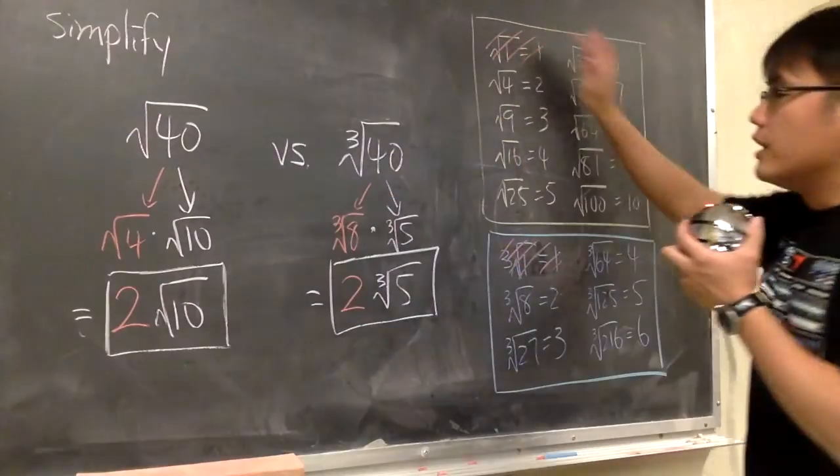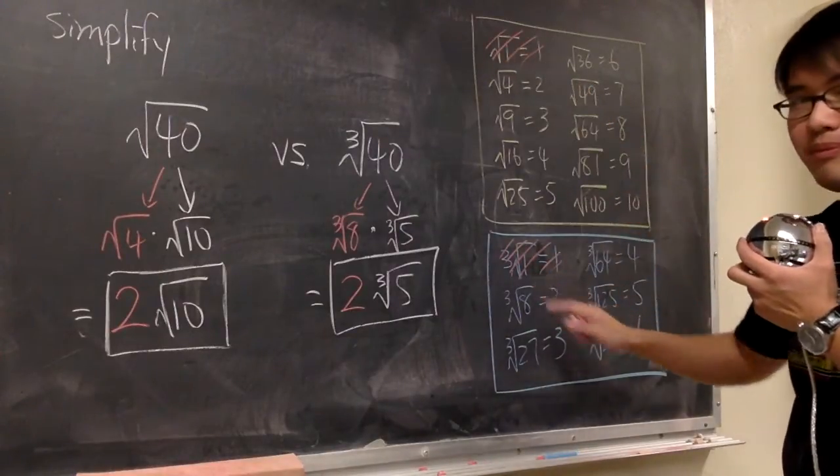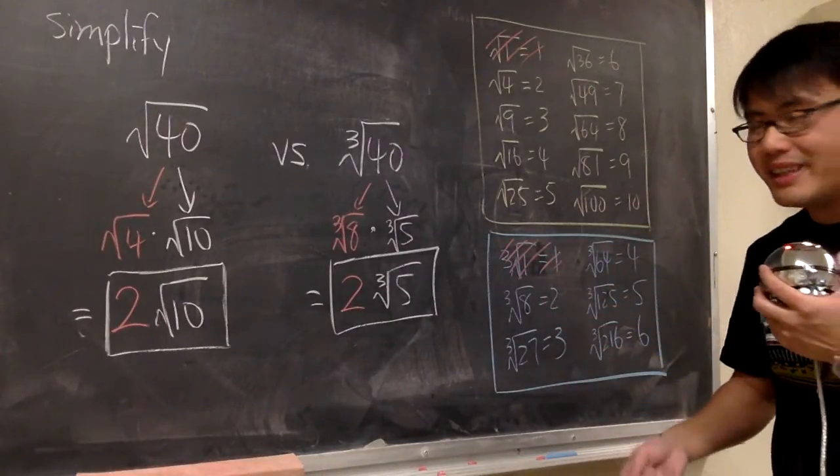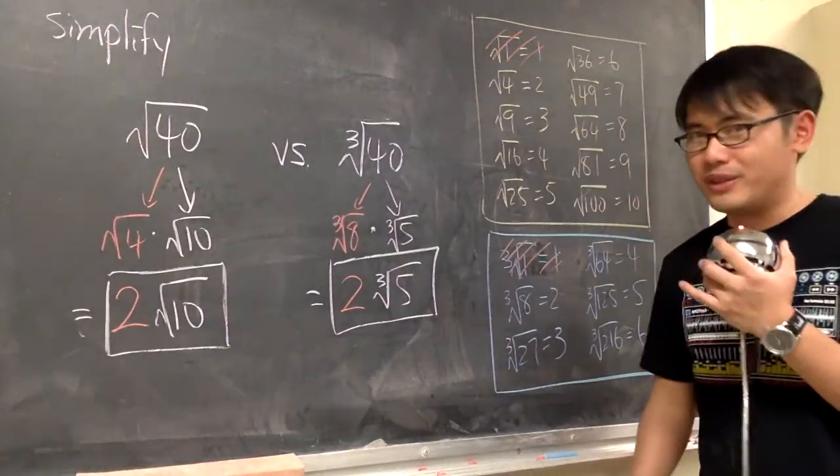By the way, you never use 1, because 1 doesn't do us any good. That's why I cross out the 1. I just put a 1 there, so I can have a nice table, but we never use 1.